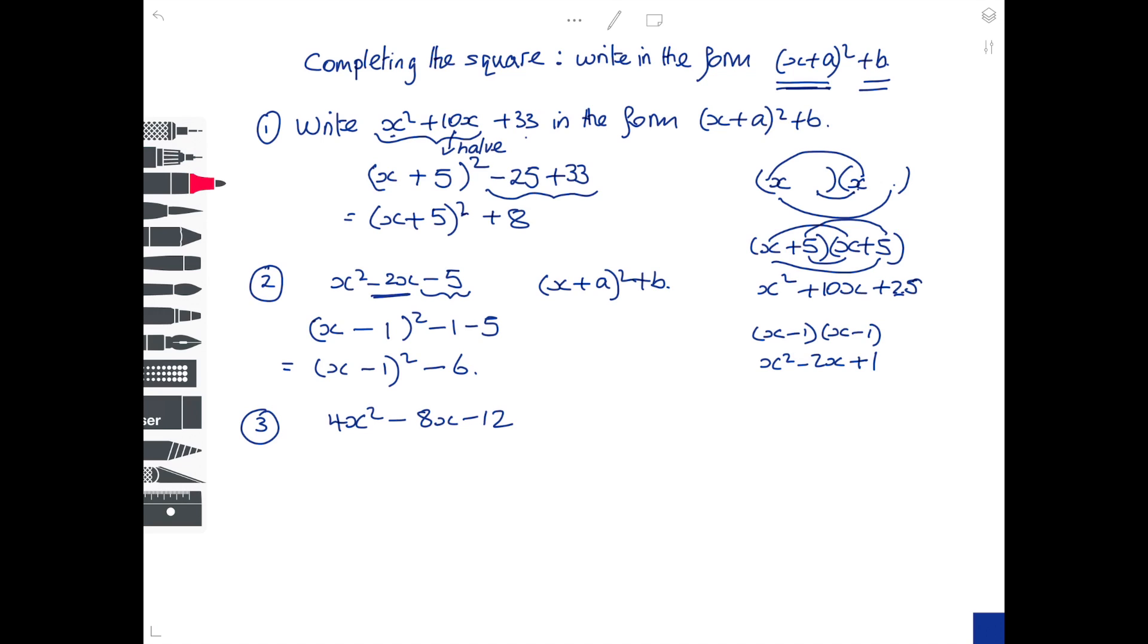These questions generally just say complete the square. The problem is this coefficient here, this number 4 in front of the x². So the first thing you do is take the 4 out as a common factor, a big 4 right at the beginning of the expression but don't forget about it later on. Use curly brackets if you can draw them, or big square brackets, because we're going to need round brackets later on.